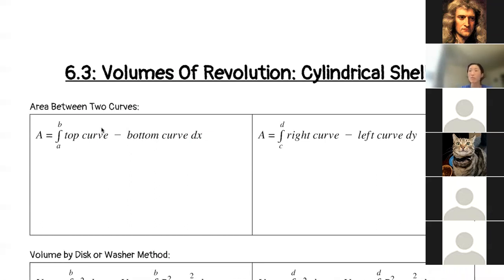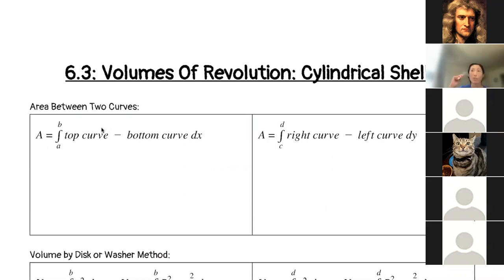We're still going to be doing that, but what we're going to look at now is how do we answer those questions that we were not able to answer — like example 12 from 6.2. How do we answer those kinds of questions?